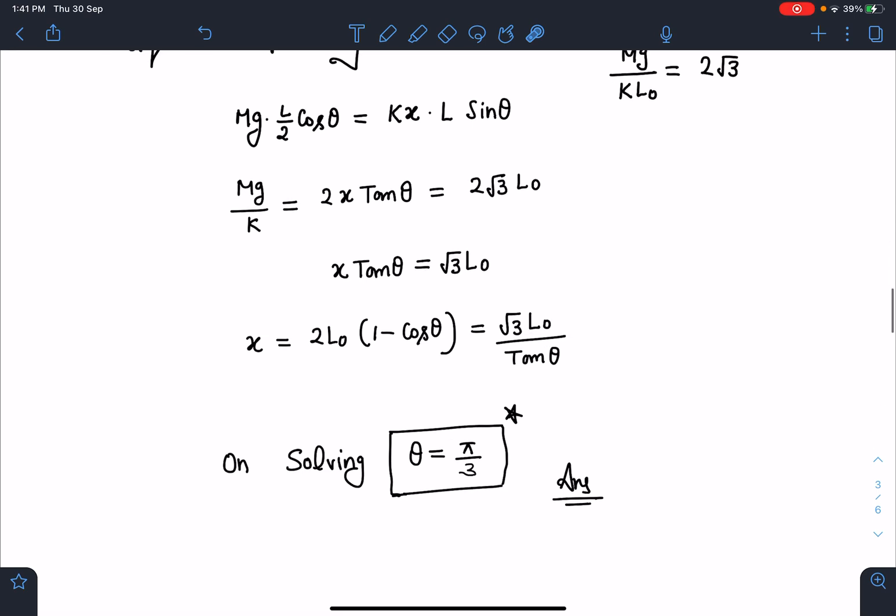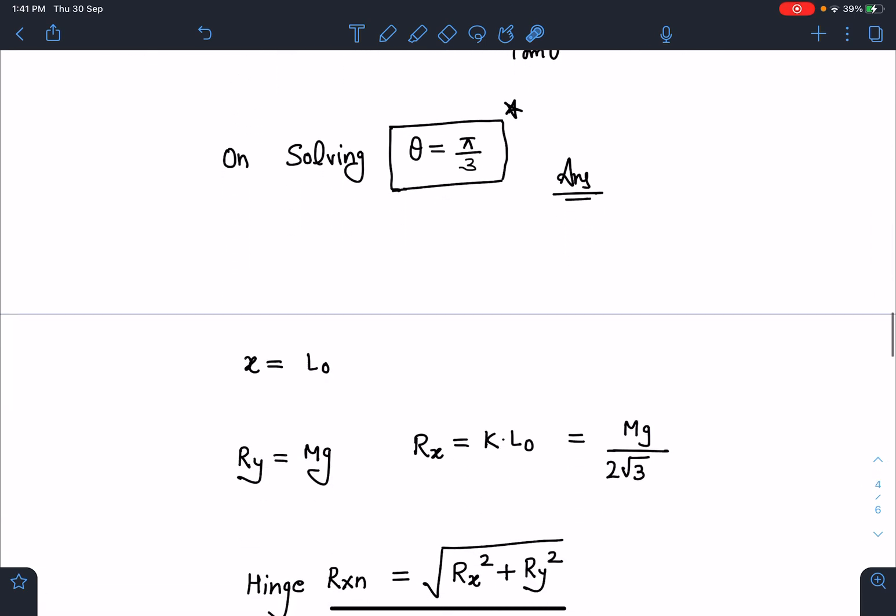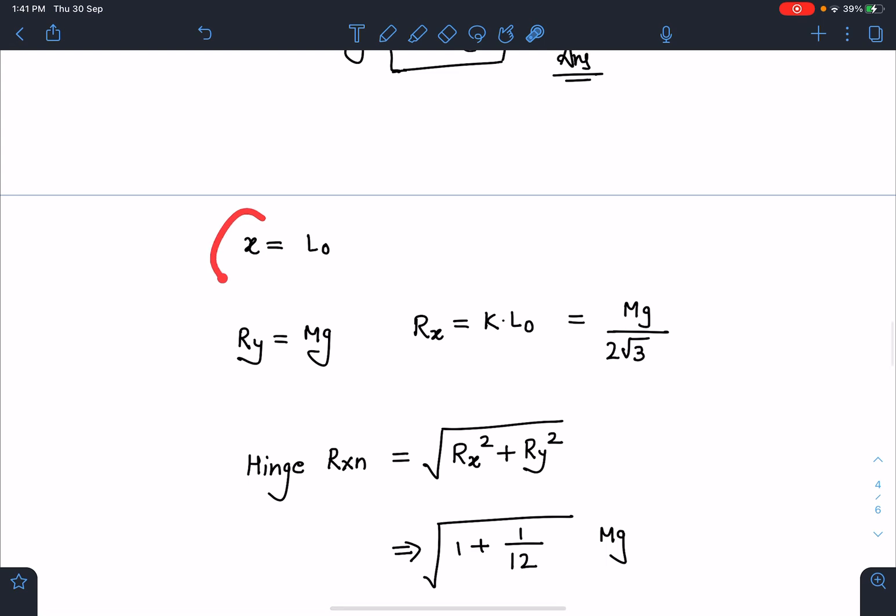And now if I know the theta, I know this x is L₀ and Ry is Mg which will become just Mg and Rx is kL₀ which is going to give me Mg/(2√3). Here you can verify this fact again.